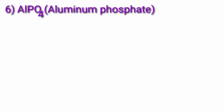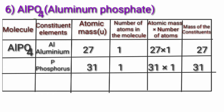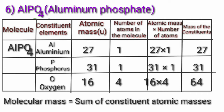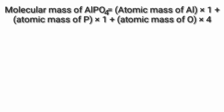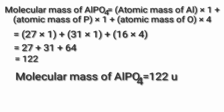Sixth, AlPO₄ — aluminum phosphate. Constituent elements: aluminum atomic mass 27, phosphorus atomic mass 31, oxygen atomic mass 16. Molecular mass of AlPO₄ = (27×1) + (31×1) + (16×4) = 27 + 31 + 64 = 122. So molecular mass of AlPO₄ is equal to 122 Dalton.